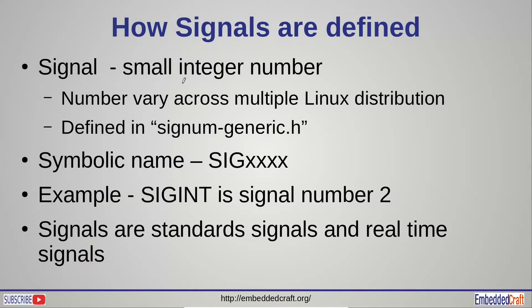Signals are defined as integer numbers. Please note these numbers depend on Linux distribution, so always refer to signum-generic.h file available with Linux distribution. For example SIGINT is number 2.